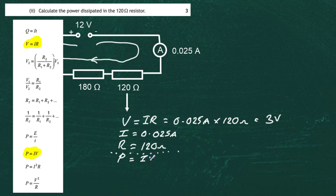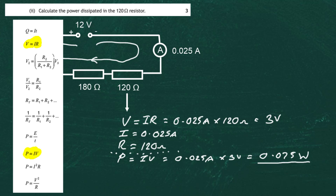We can use that equation right away because we have all the information. The power is equal to IV, so the current is 0.025 amps multiplied by the voltage of 3 volts, giving an answer of 0.075 watts. The units of power are the watt, so the power dissipated is 0.075 watts — the same as 0.075 joules per second lost in that resistor. I can also use the equation P equals I squared R.